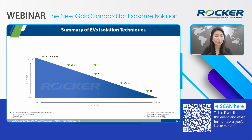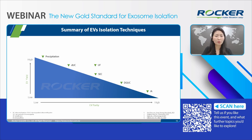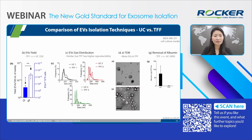This diagram summarizes the performance of five common EV isolation methods. We can see that currently no single method provides both high yield and high purity. Therefore, many studies suggest combining techniques such as TFF with SEC to get better results. The MISEV 2018 guidelines also highlight concerns about using introduced components like antibodies in immunoaffinity and polymers in precipitation, as they may interfere with downstream applications — further emphasizing the utility of TFF. Since UC is the most commonly used method, let's now compare its efficiency with TFF.